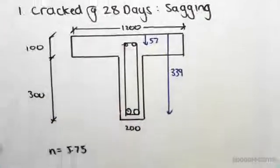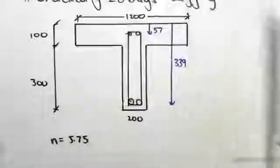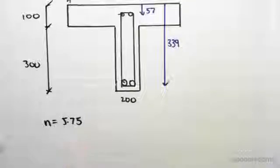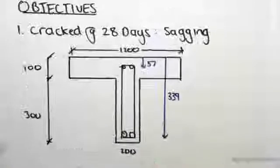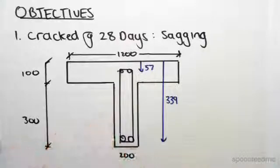The n value, the ratio of the elastic modulus of steel to concrete, is 5.75. So that's still the same. Now what we're going to do is find the corresponding areas. Before we do that, I need to show you how this problem differs from the previous one.